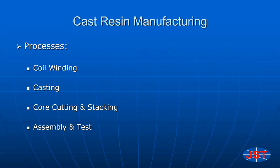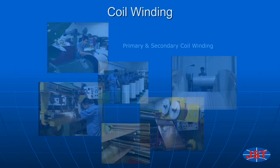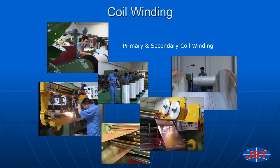There are four major processes: coil winding, casting, core cutting and stacking, then final assembly and test.